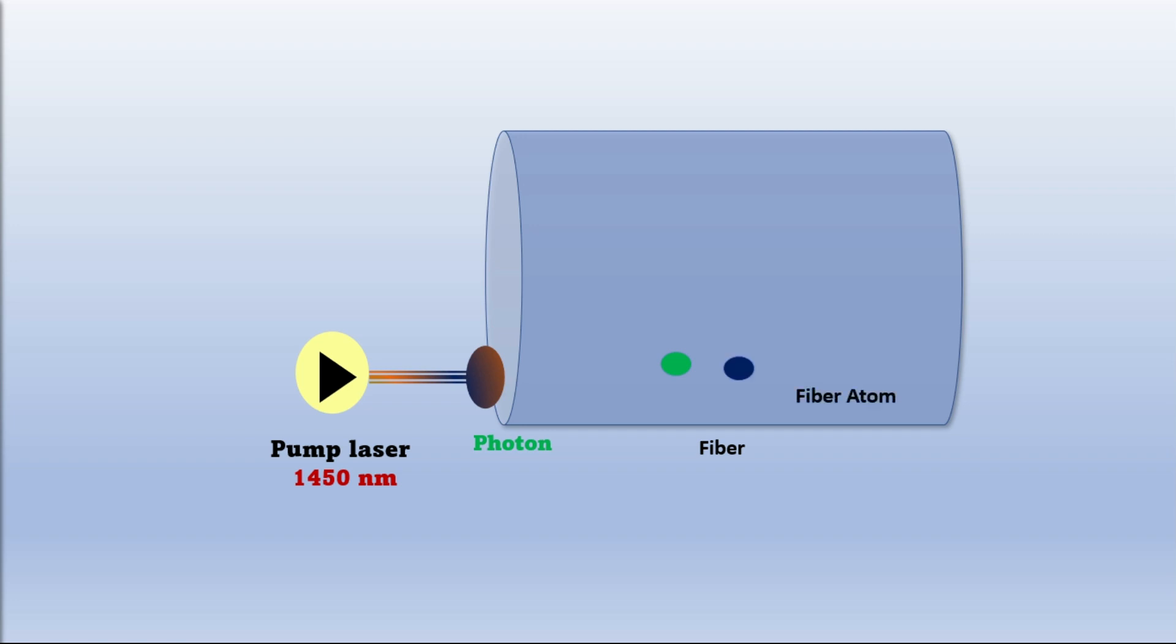Here we have fiber. Pump laser photons propagate in the fiber. In fiber we have fiber molecules or atoms. Pump laser photons collide with fiber molecules and are absorbed by fiber molecules. This excites the molecules or atoms to higher energy levels.